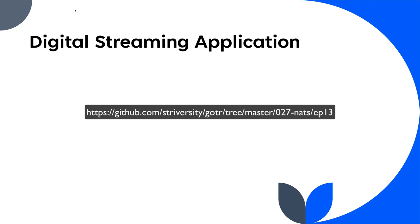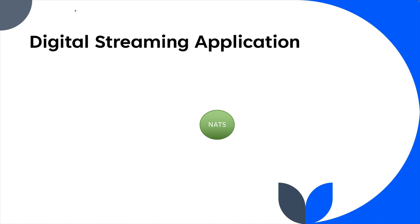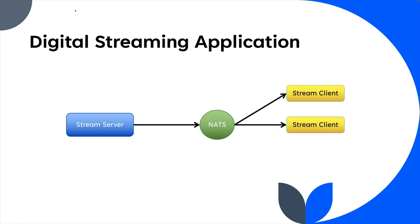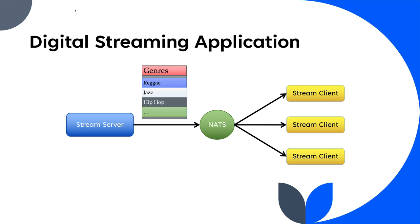Let's say we want to build a digital streaming application — something like Spotify or video streaming. It's a stream of digital content, and we want to use NATS as the core of our solution. We can imagine we're going to have a stream server that's going to be pushing out information — the metadata about what we want to stream — and then clients that can connect and register or subscribe for that information. Something the streaming server could be pushing out is all the genres of, let's say, music. It can push out the song title for different genres, and clients can subscribe to whichever genre they're interested in.